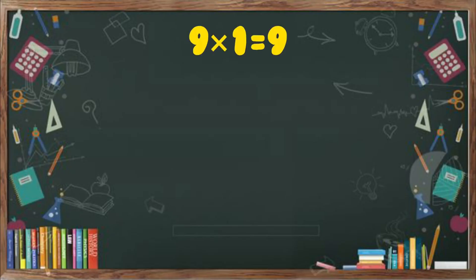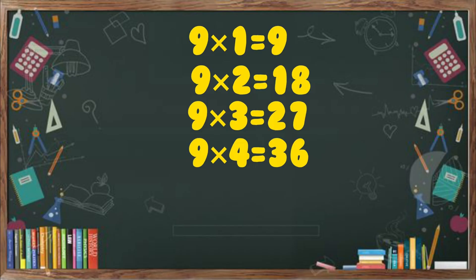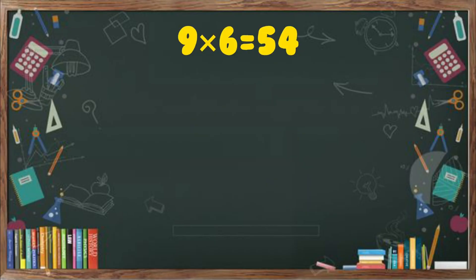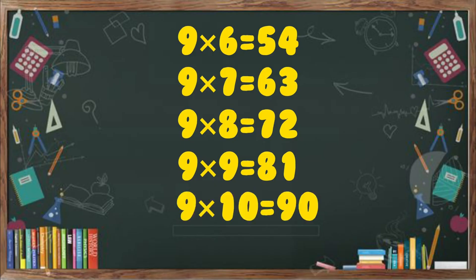9 1's a 9. 9 2's a 18. 9 3's a 27. 9 4's a 36. 9 5's a 45. 9 6's a 54. 9 7's a 63. 9 8's a 72. 9 9's a 81. 9 10's a 90.